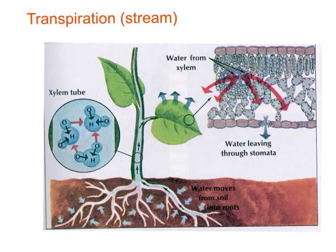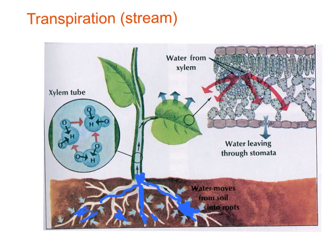Now we get to the key part: how water moves up plants. The story begins in two places. Water moves into the roots by osmosis, but it can only travel so far into the roots that way. Eventually it will stop. It has to be taken the rest of the way up the plant using a different system — and thankfully, there is something called transpiration that does this.